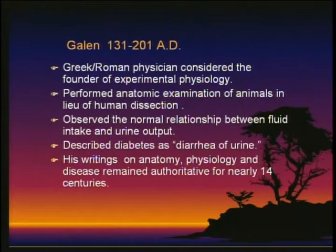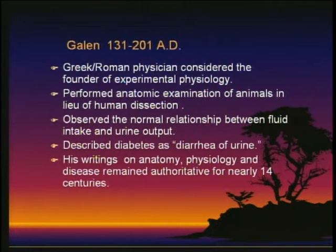Some major advances were made by the time we get to Galen, 131 to 201 AD. He was a Greek in the Roman Empire, a physician considered the founder of experimental physiology. He did a lot of anatomic examination of animals — he wasn't allowed to examine humans, so he did a lot of dissection. He observed the normal relationship between fluid intake and urine output, and described diabetes as the 'diarrhea of the urine.' His writings in anatomy, physiology, and disease remained authoritative for basically the next 14 centuries.